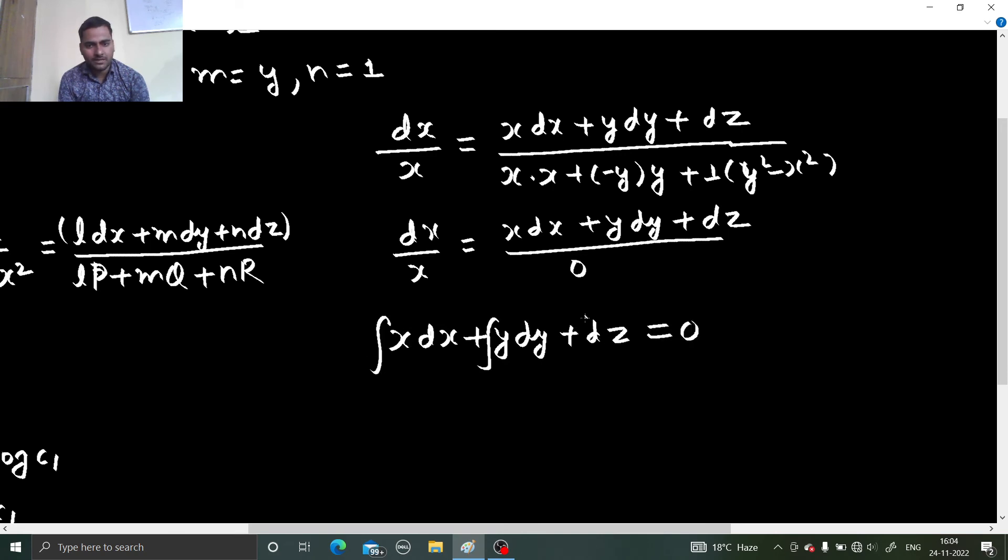Simply integrate it. You are going to get x square by 2 plus y square by 2 plus z equals to c2. That's what you needed. Mark them as v. There you got. You only need two equations to move ahead.